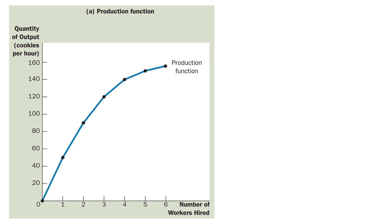When we plot these two combinations, on the horizontal axis we have taken the number of workers hired, and on the vertical axis we have taken the quantity of output — cookies per hour. When we plot these combinations from the table, what we get is the production function.